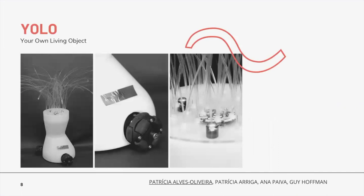Our final robot is called YOLO and it looks like this. It has about 12 centimeters in height. It's lightweight. It has three omni wheels and a light on the top of its head. It is not humanoid, and this was a robot that emerged from this design process.